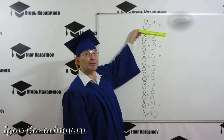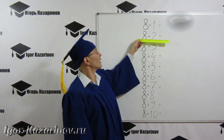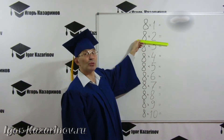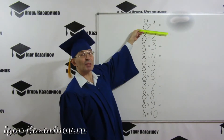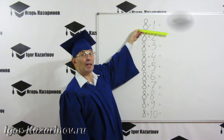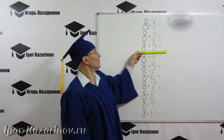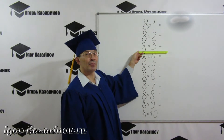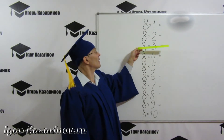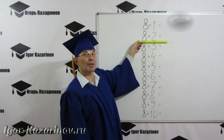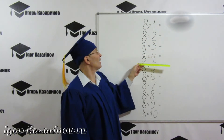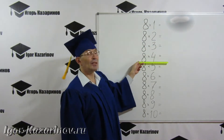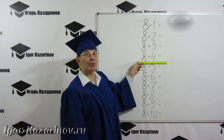8×1=8, 8×2=16, 8×1=8, 8×3=24, 8×2=24, 8×4=32.